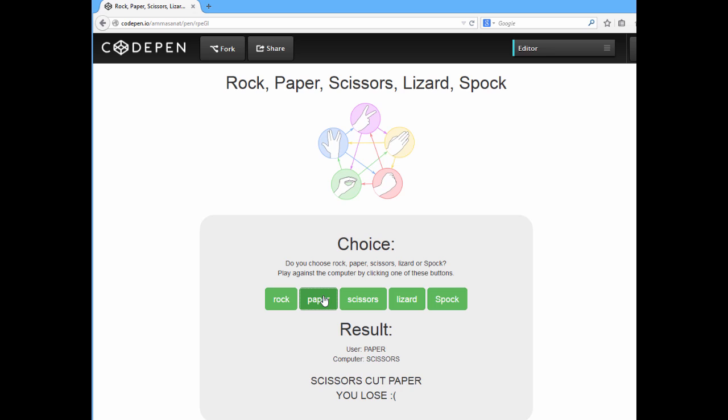Unfortunately, we lose this time because the computer chose scissors. Now, this is lots of fun. And in fact, the computer is playing at a one-fifth probability here. So, it's lots of fun to see how you can beat the computer or lose to the computer.